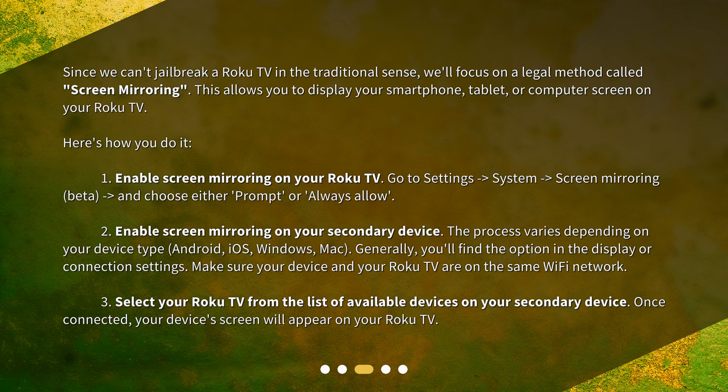Step 2: Enable screen mirroring on your secondary device. The process varies depending on your device type — Android, iOS, Windows, or Mac. Generally, you'll find the option in the display or connection settings. Make sure your device and your Roku TV are on the same Wi-Fi network.